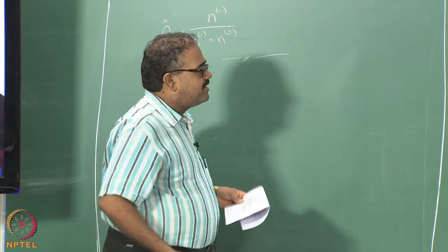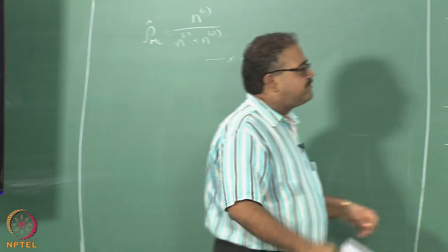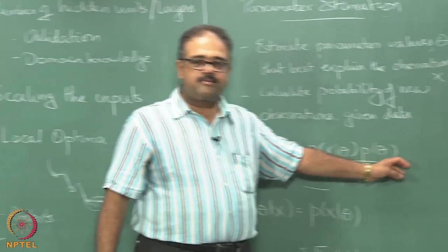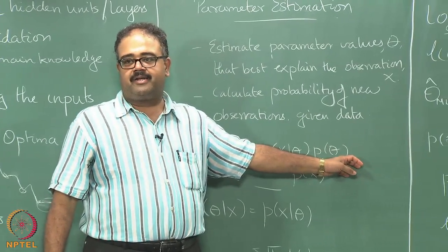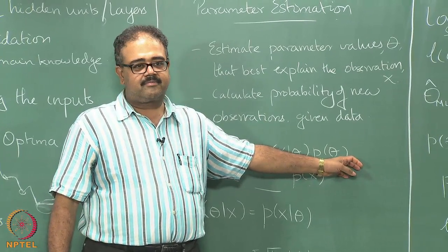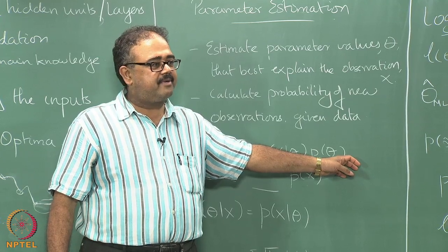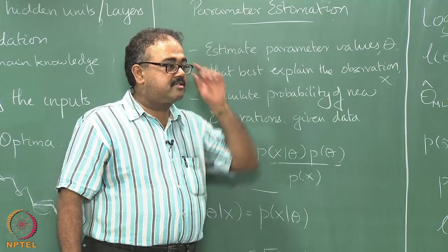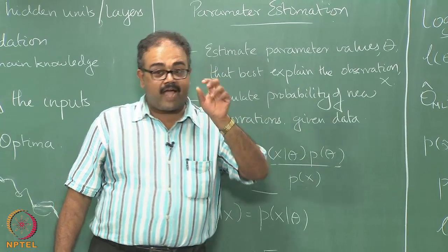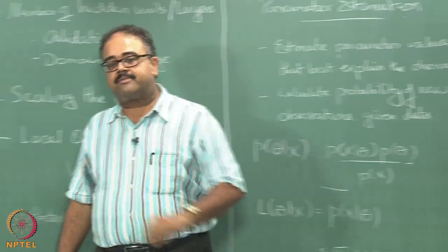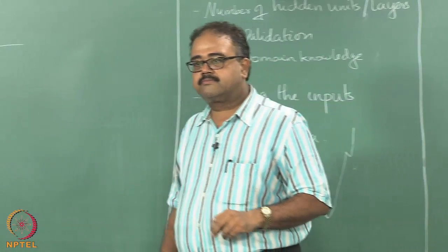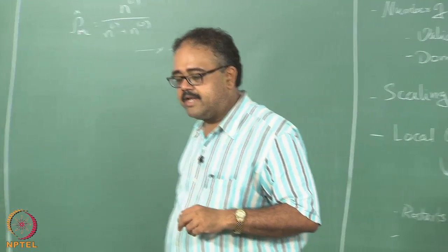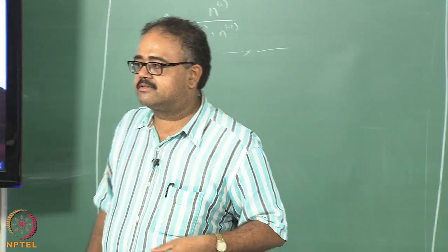So far, we assumed that the whole motivation for doing maximum likelihood was: I did not know anything about the parameters before I started the experiment — before I gathered the data, I did not know anything about the parameters. But suppose I did know something about the parameters. So what could you know about the parameters?